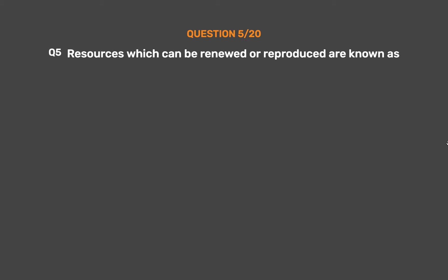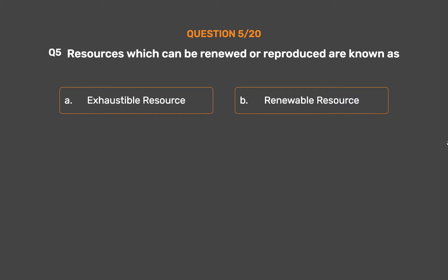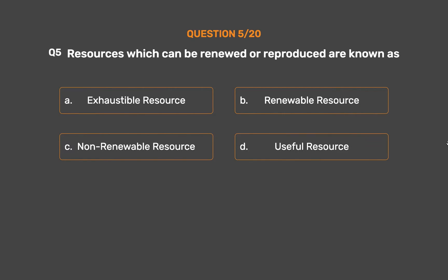Question number 5. Resources which can be renewed or reproduced are known as: Option A: Exhaustible resource. Option B: Renewable resource. Option C: Non-renewable resource. Option D: Useful resource.